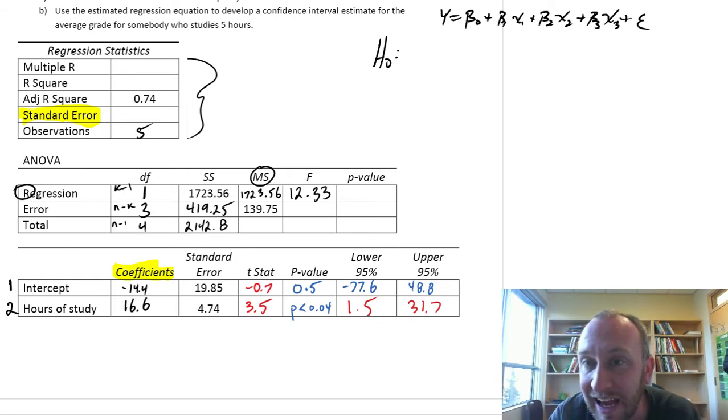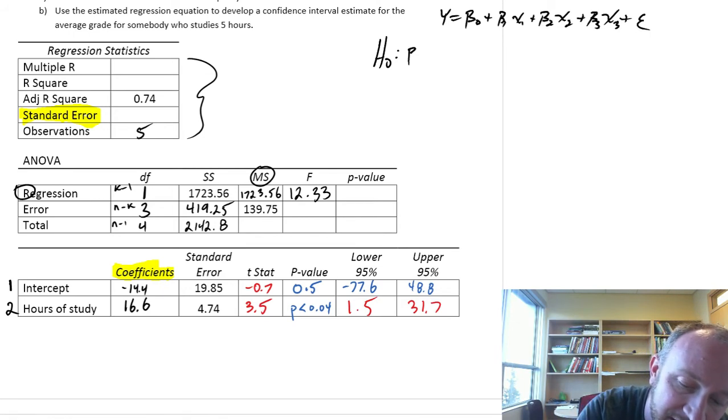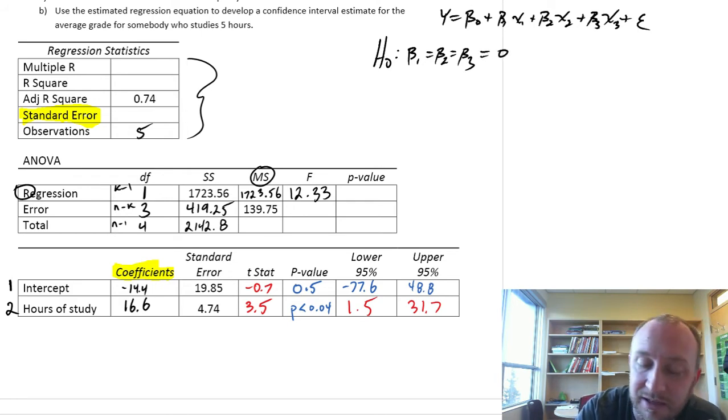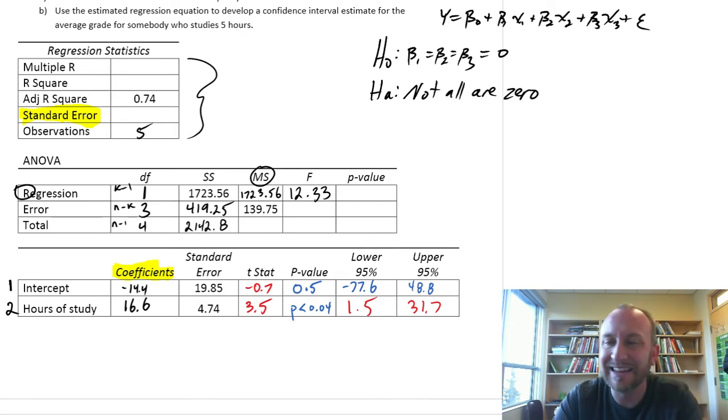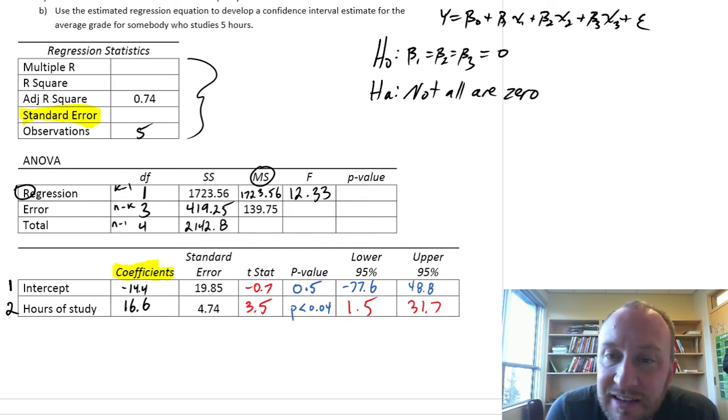This is what we'll be getting into in module 15. Well, the F test is testing for model significance, which means it's testing to see is B1 equal to B2 equal to B3. And they're all simultaneously equal to zero. The alternative, not all, are zero. So this is in a multiple regression setting. The F test is testing. Are all of those coefficients simultaneously equal to zero?